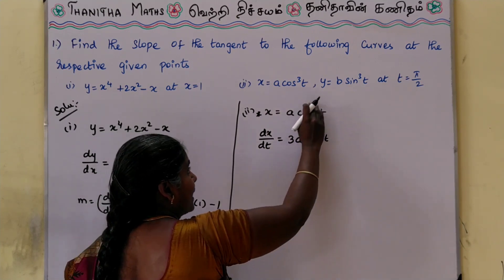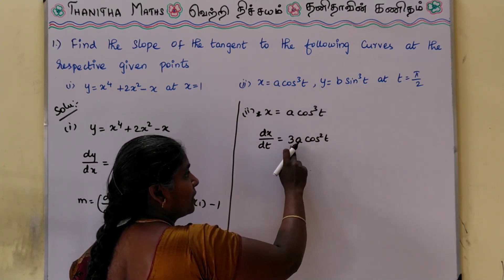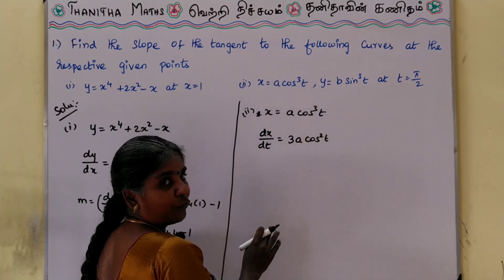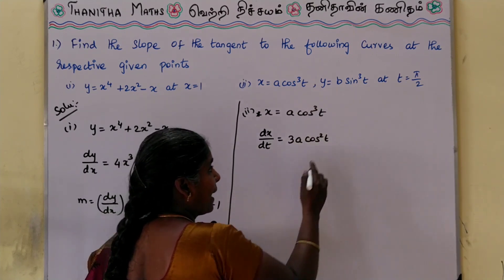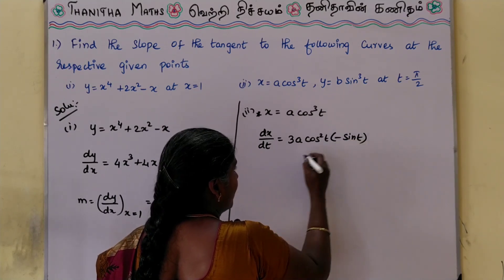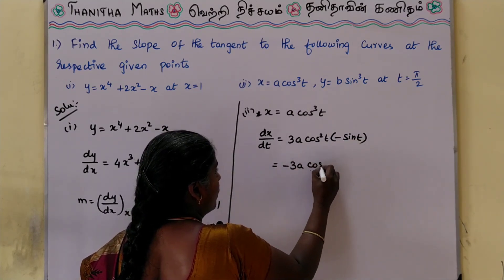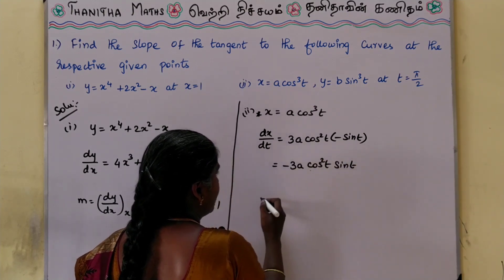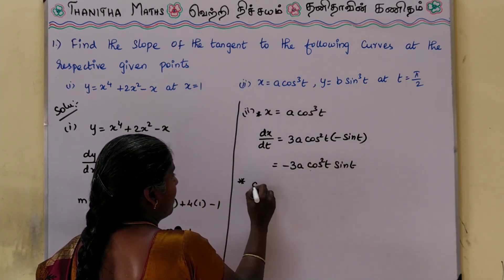We apply the chain rule: cos cube t differentiated — first bring down 3 cos square t, then differentiate cos t which gives minus sin t. Therefore, dx by dt is equal to minus 3a cos square t sin t.